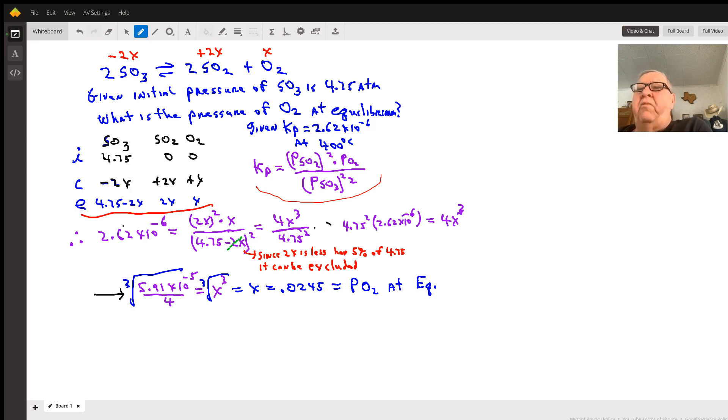When we have that expression, it looks like the algebraic equation from hell, except we can cancel out the minus 2x in the denominator, because 2x is going to be less than 5% of 4.75, so we can exclude it. That simplifies it greatly.